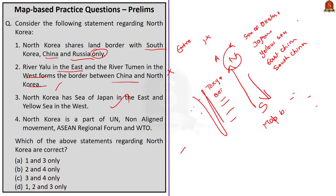The next thing near North Korea is Japan. Japan actually has five islands: Hokkaido, Honshu, Shikoku, Kyushu, and Okinawa. I arranged them from north to south. Map-based questions will come like that — they will give you these islands and ask you to arrange them from north to south or south to north.